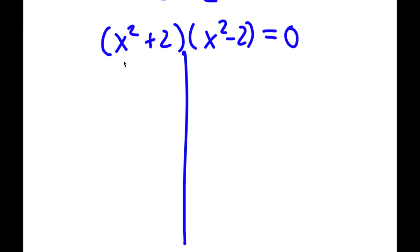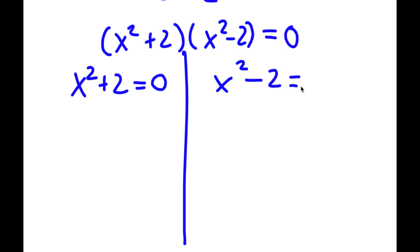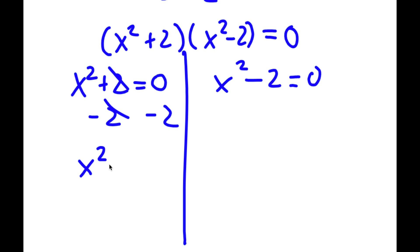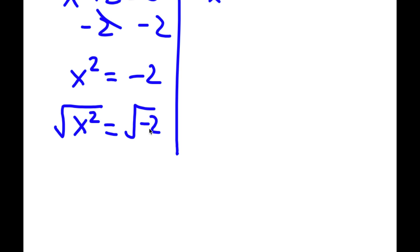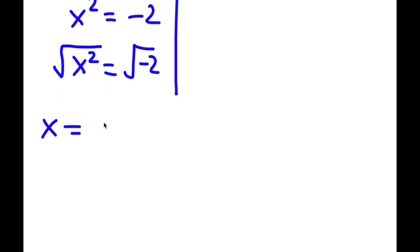This gives me two equations: x squared plus 2 is equal to 0, and x squared minus 2 is equal to 0. For x squared plus 2 equals 0, I'm going to subtract 2 on both sides. These two cancel out and I'm left with x squared is equal to negative 2. Now I'm going to take the square root on both sides, so the square root of x squared equals the square root of negative 2, giving x equals plus or minus the square root of negative 2.